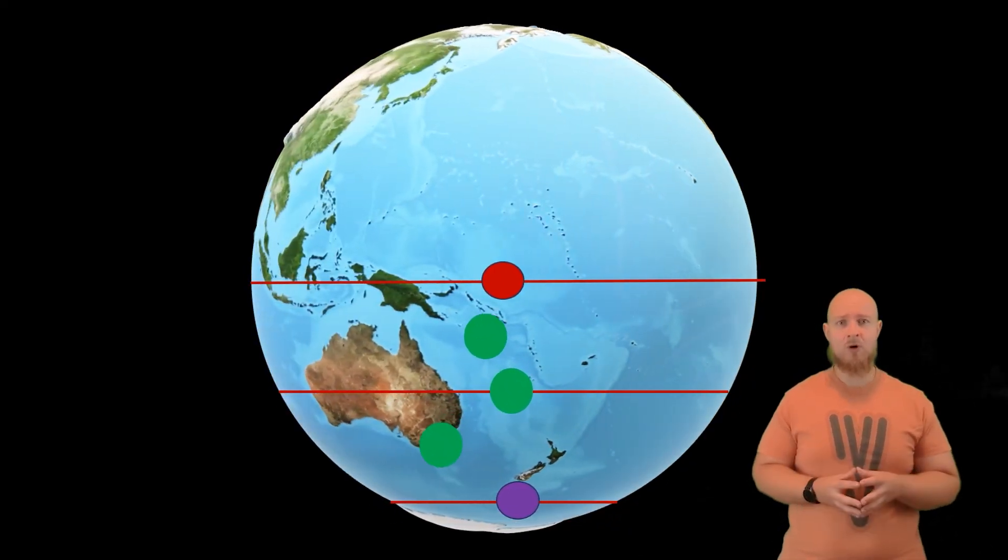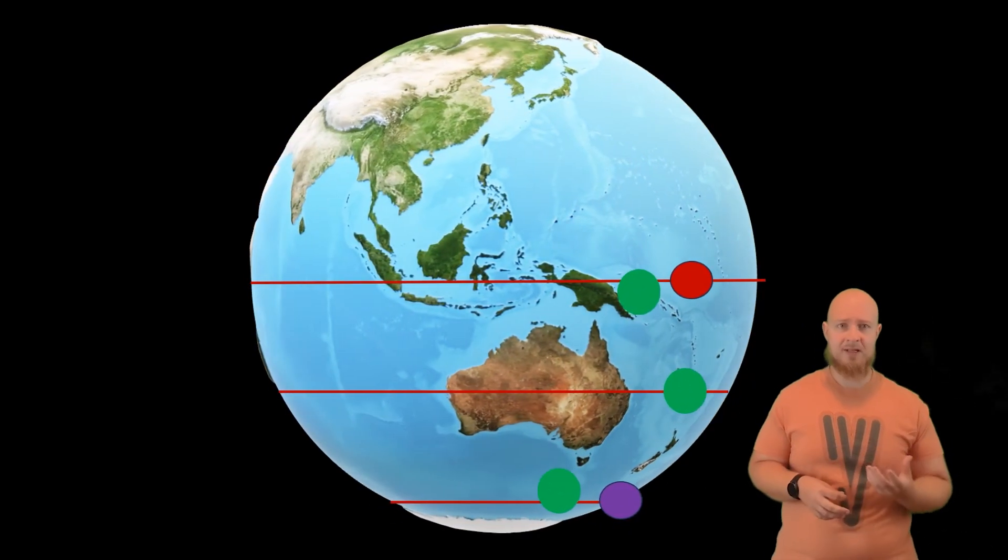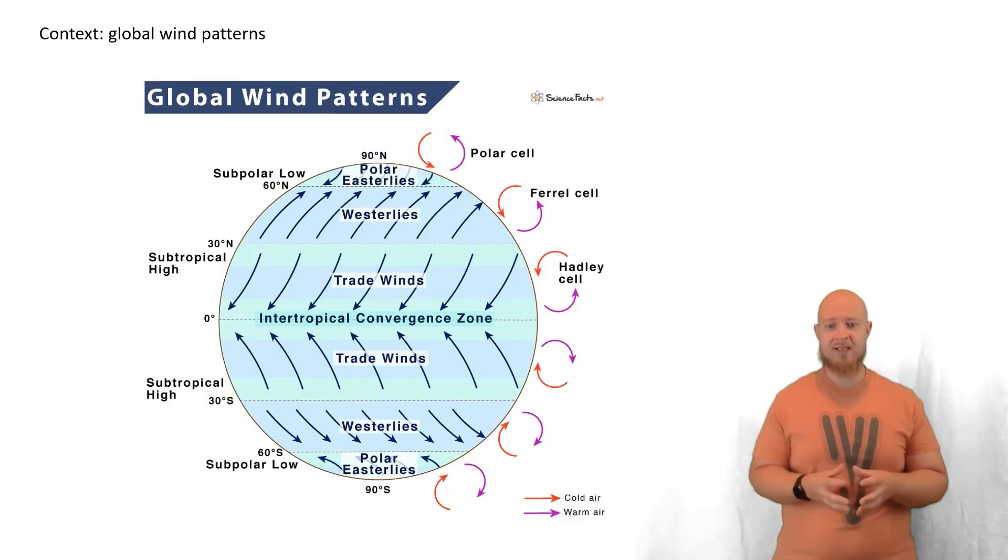This deflection is what causes the westerlies and the easterlies, which are named based on the direction the wind is coming from. Along the equator, because the wind is originating from the east, we call these the easterlies. These are also referred to as the trade winds, as historical reference for the winds that push trade ships along the routes in the tropics.